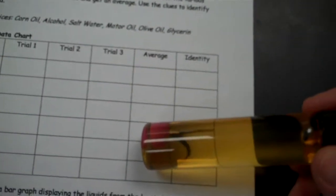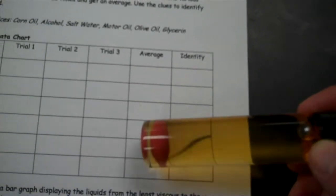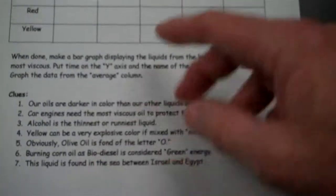We find that the purple one, the purple bead, has the longest time. So that's the most viscous oil. That one must be car oil or motor oil. So you'd write motor oil there.